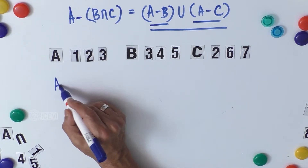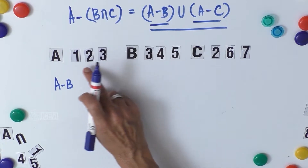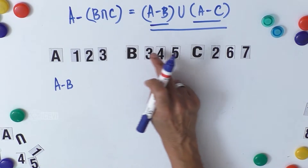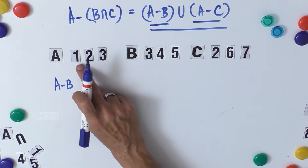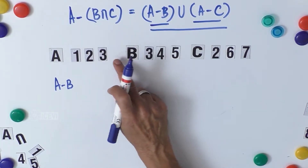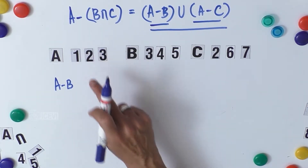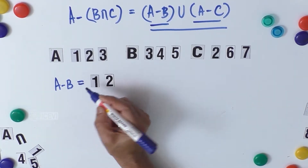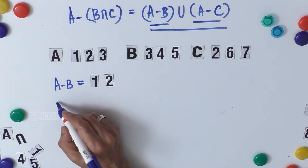Let us take A minus B. The elements of A which are not in B — set A is {1, 2, 3} and set B is {3, 4, 5}. So 1 and 2 are not in B, meaning A minus B consists of 1 and 2.